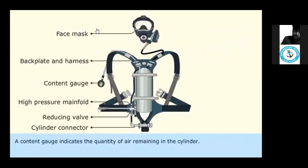A content gauge indicates the quantity of air remaining in the cylinder. A whistle is triggered when the pressure of air in the cylinder reaches a predetermined level. At this point, the place is evacuated.